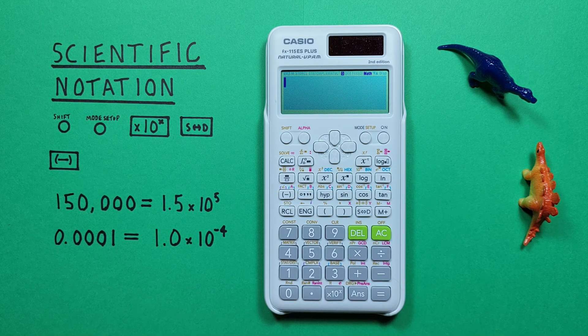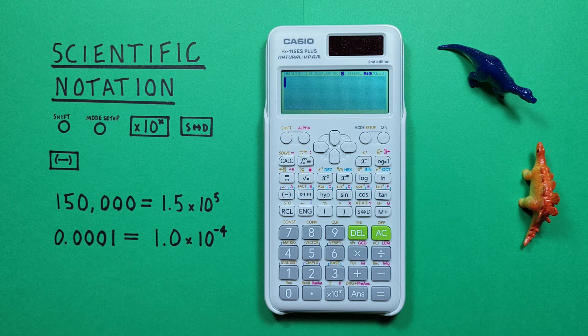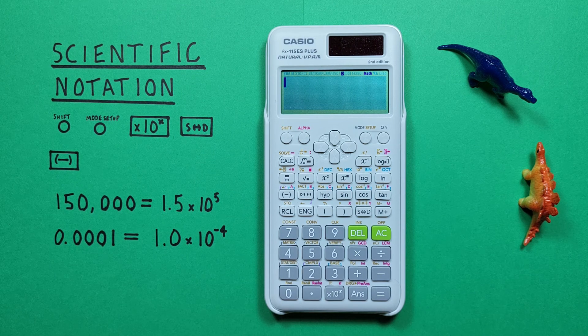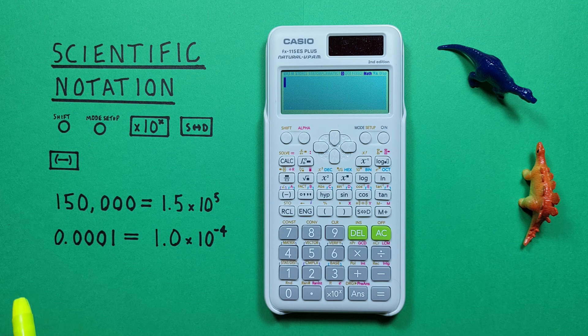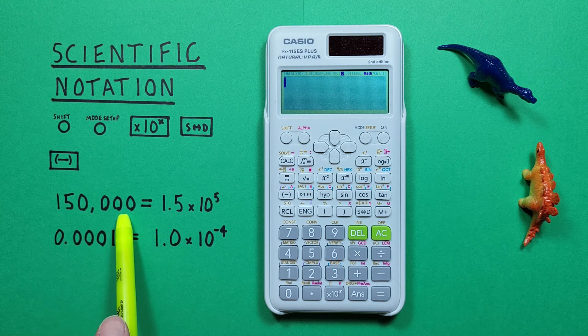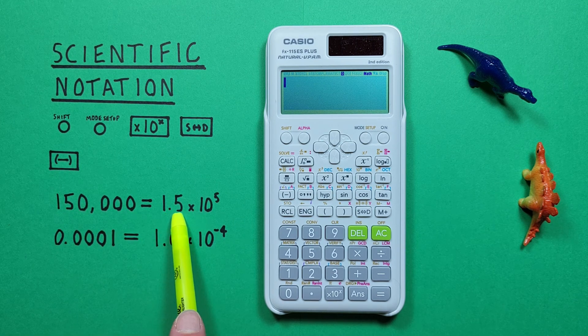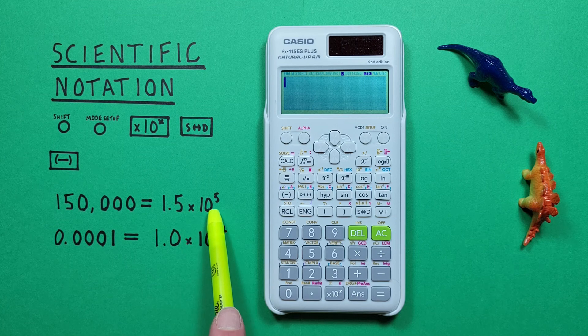We can use scientific notation on this calculator to make really large or really small numbers a little more manageable. It allows us to write a number like 150,000 as 1.5 times 10 to the power of 5.